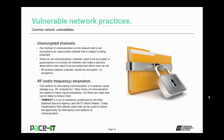Unencrypted communication channels are another problem. Any method of communication on the network that is not encrypted is an unencrypted channel subject to being breached. While not all communication channels need to be encrypted, a good practice is to review all channels and make a decision about which ones need to be encrypted and which ones do not. All wireless network channels should be encrypted — there are no exceptions. Do not create an unencrypted wireless network; that's just asking for problems.